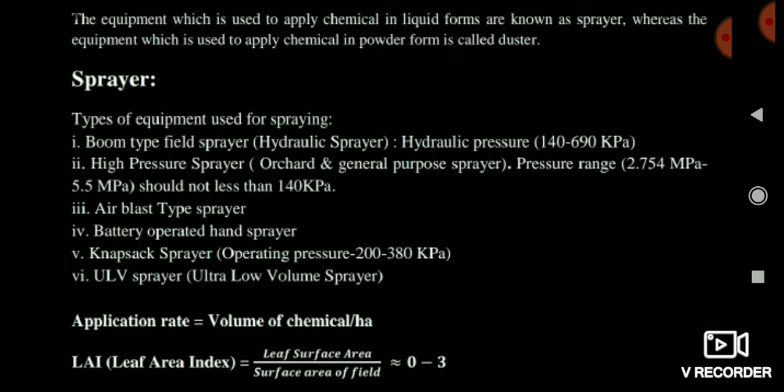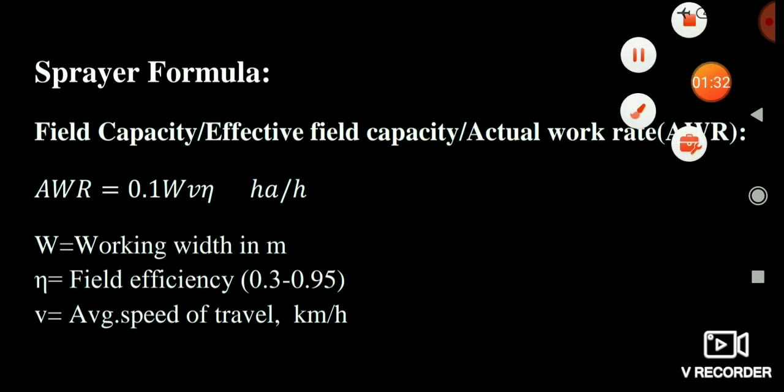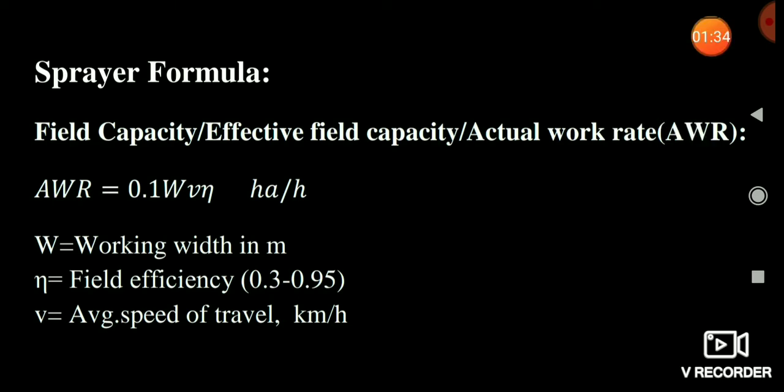The LAI range is 0 to 3. Now, the next terms are field capacity, effective field capacity, and actual work rate. All of you have a little idea of field capacity. The actual work rate is essentially a type of field capacity.